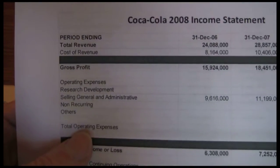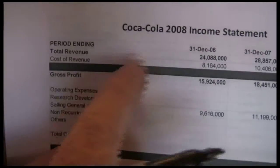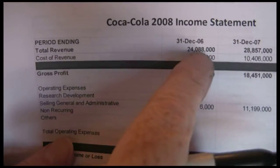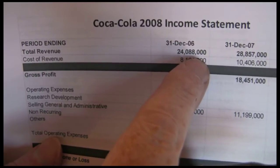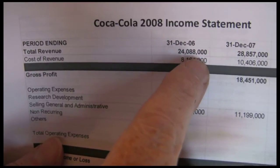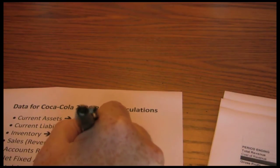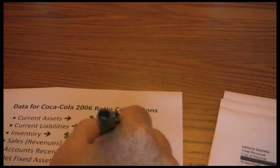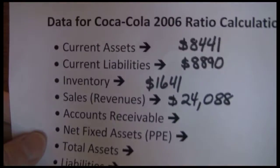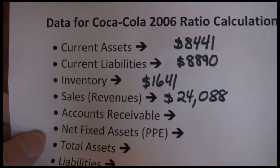Next we need our sales, our revenues. That's going to be on the income statement, so we have to get the income statement out. The top line on the income statement is revenues — revenues are sales. That's $24,088,000. In our case we're going to write down $24,088. So we now have our sales and revenues recorded at $24,088.